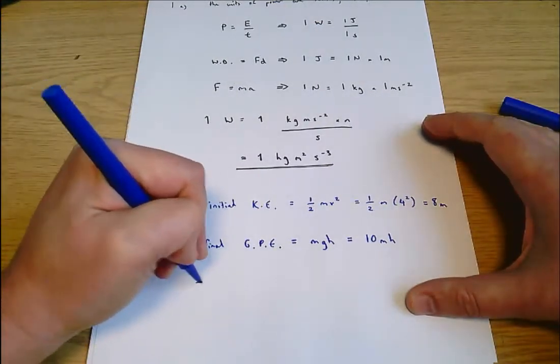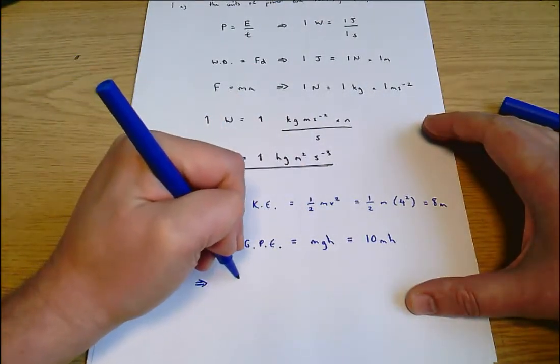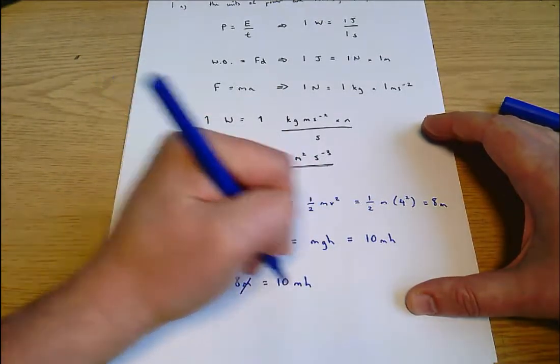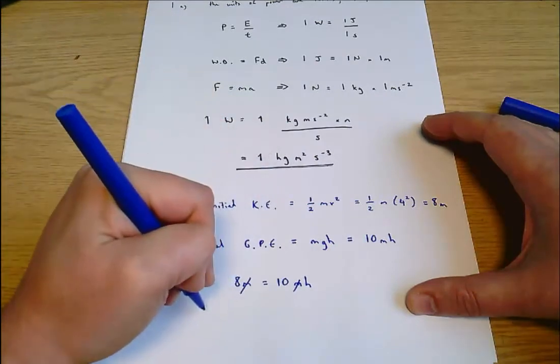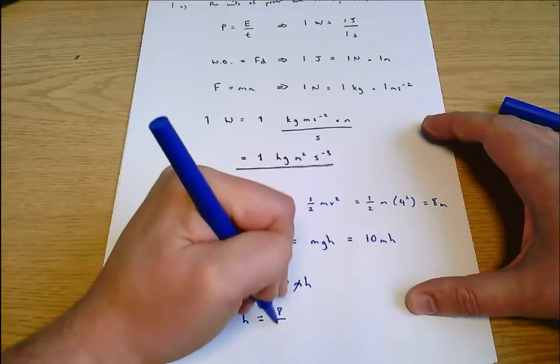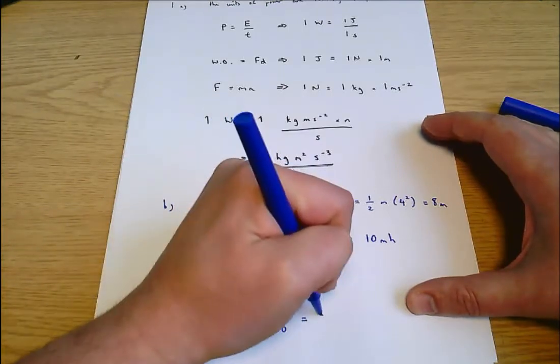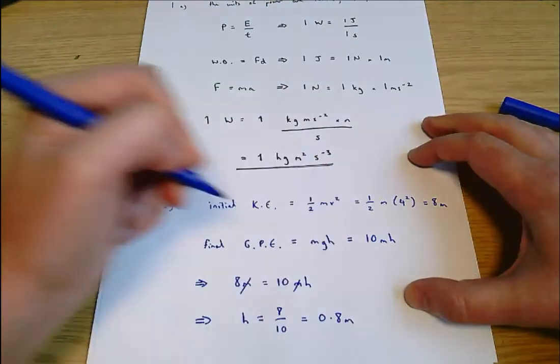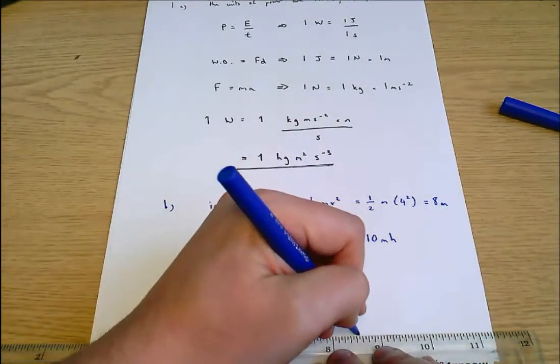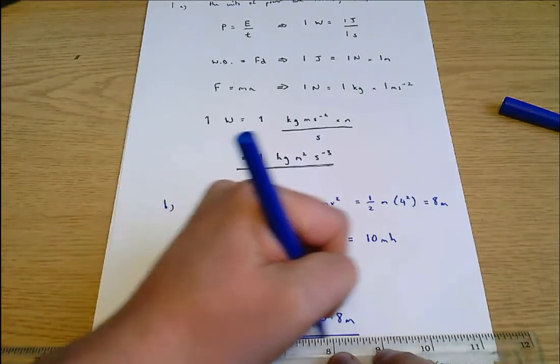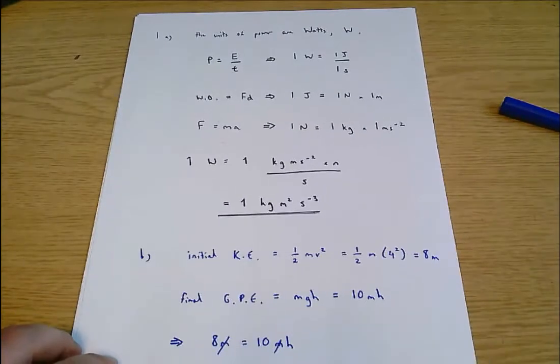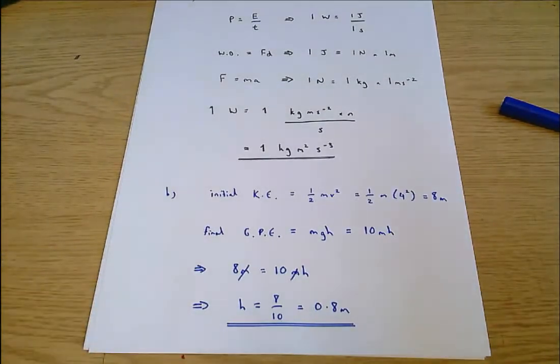The final gravitational potential energy equals mgh equals 10mh. We're told to use 10 for gravity. Therefore, we get that 8m equals 10mh. The m's on both sides cancel and h equals 8 over 10 equals 0.8 meters. And that's the final answer. So that is part A and B complete.